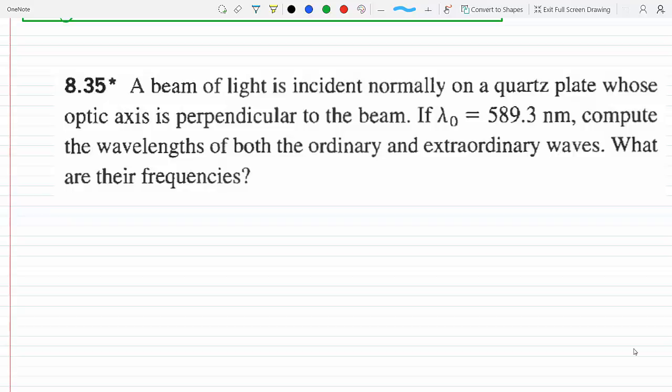We know that the index of refraction in general is equal to λ₀ over λ. So if we're talking about the wavelength of the ordinary wave, this will be n_o and this will be λ_o.